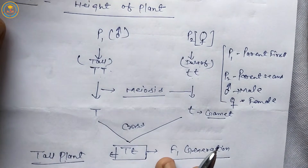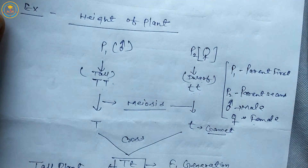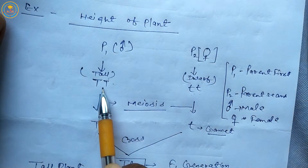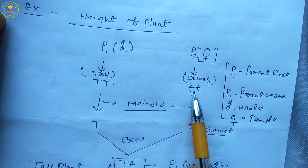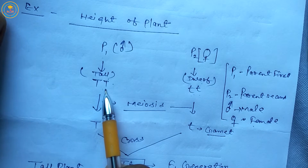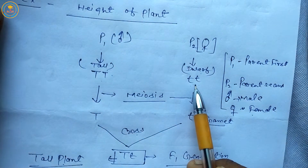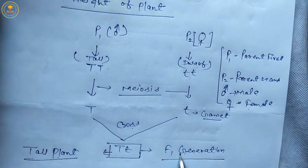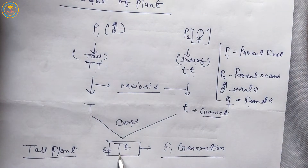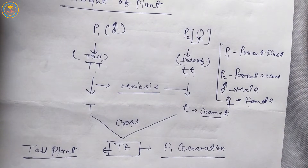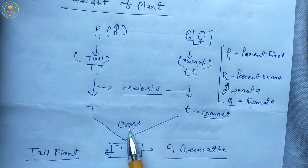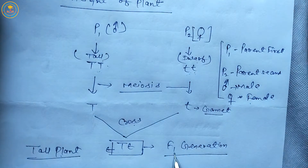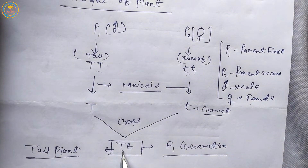So the first law of dominance states: when a homozygous dominant crosses with a homozygous recessive, it forms the F1 generation. In the F1 generation, only the dominant character is expressed. This is called the law of dominance.